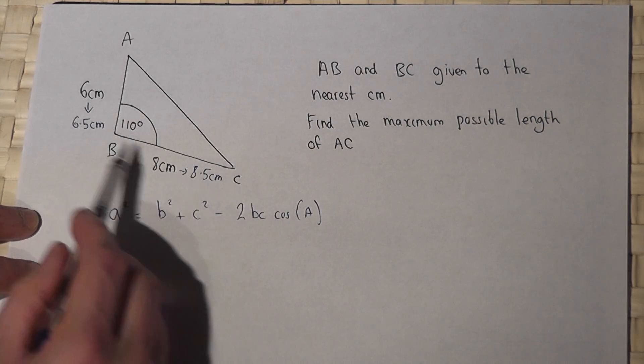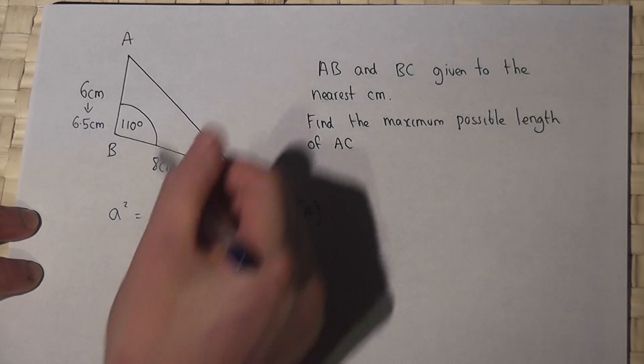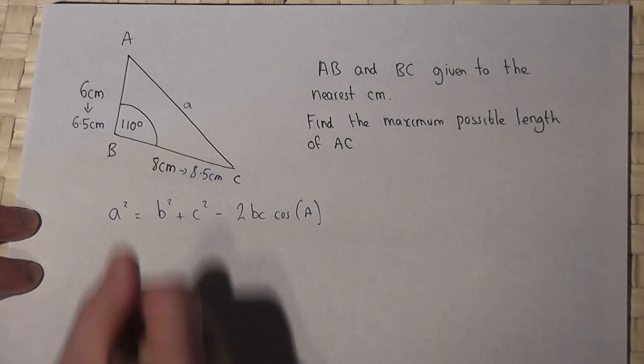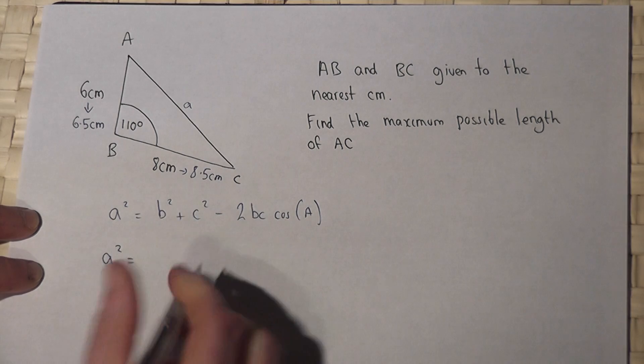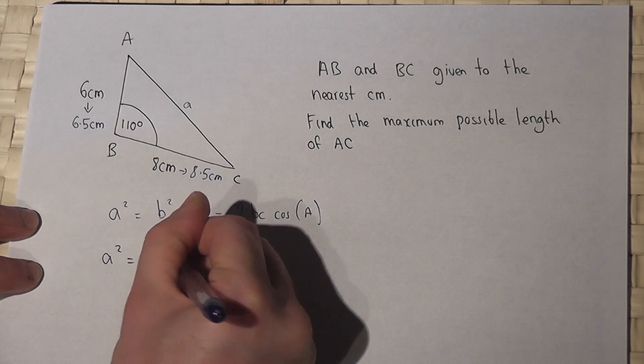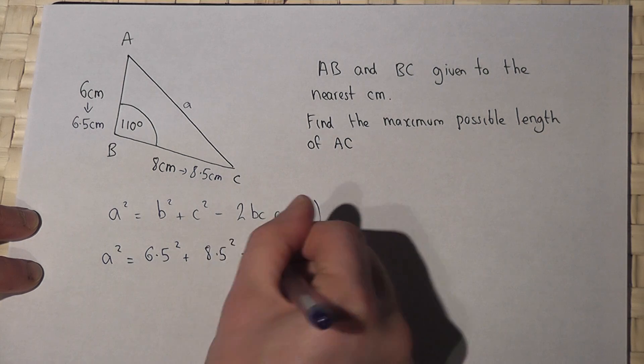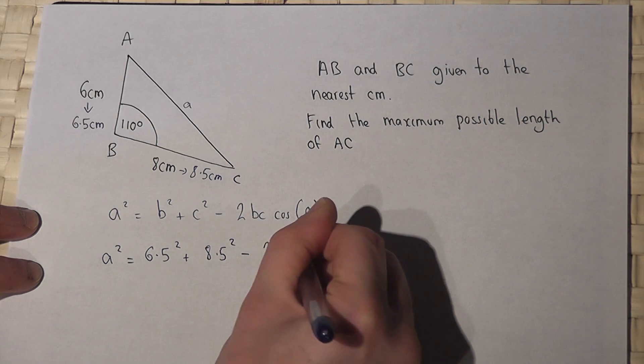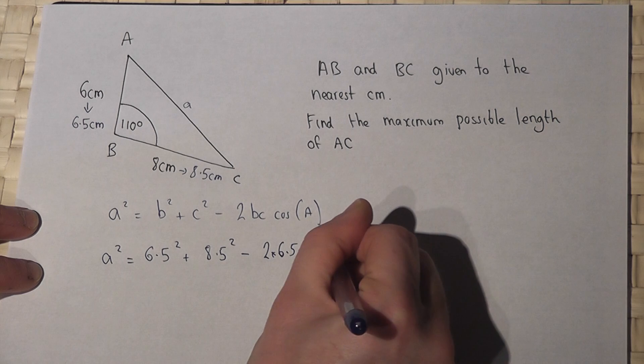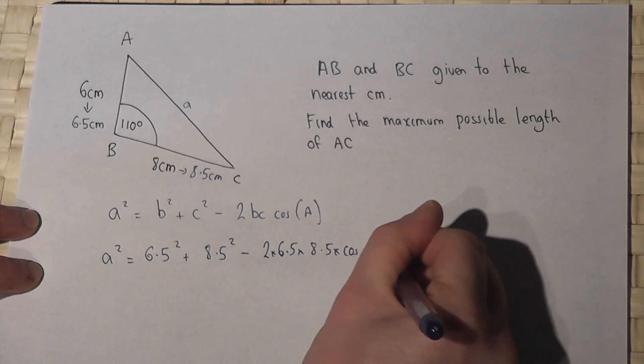So I call it a, so a² equals 6.5² plus 8.5² minus two lots of 6.5 times 8.5 times cos of the angle.